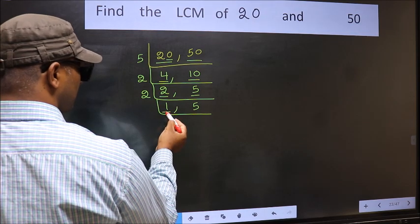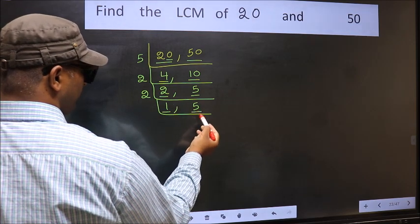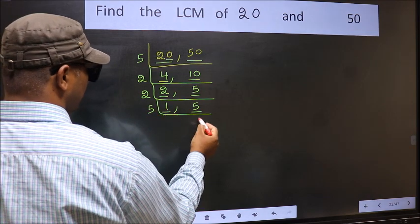Now we got 1 here. So focus on the other number 5. 5 is a prime number. So 5, 1 is 5.